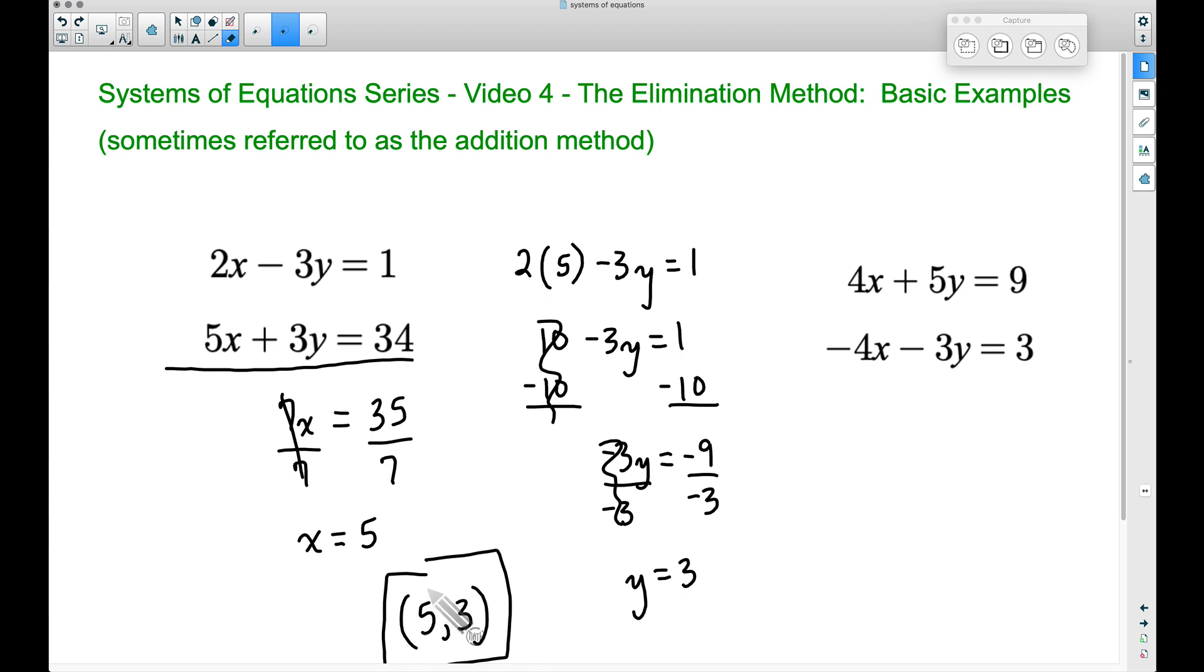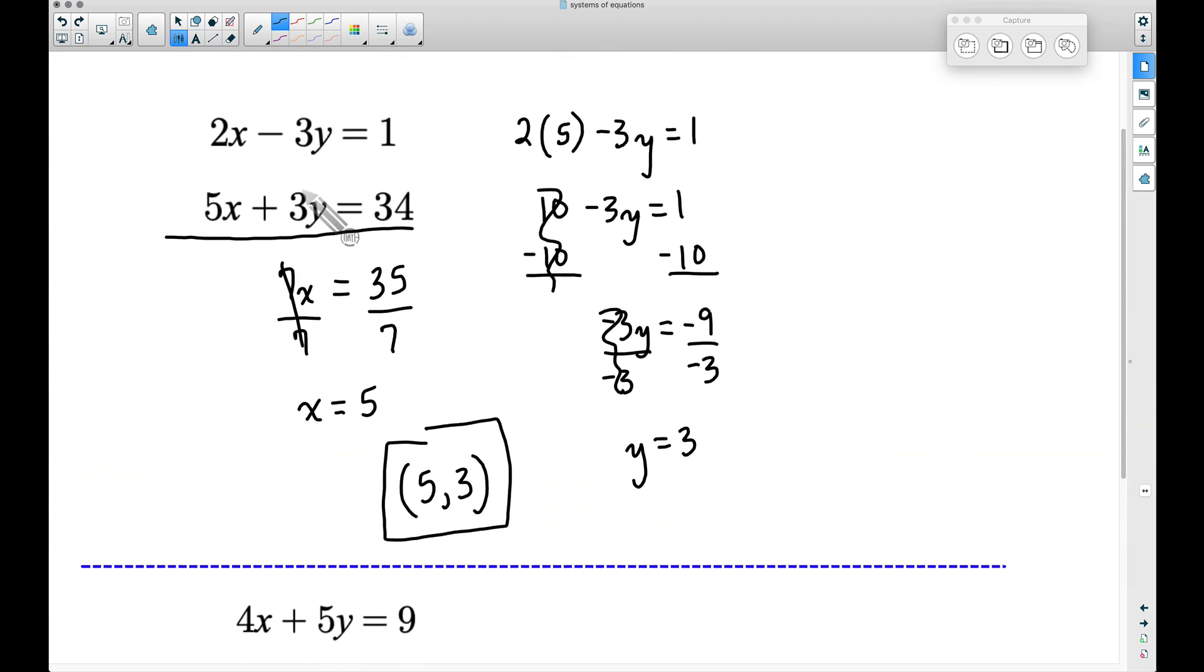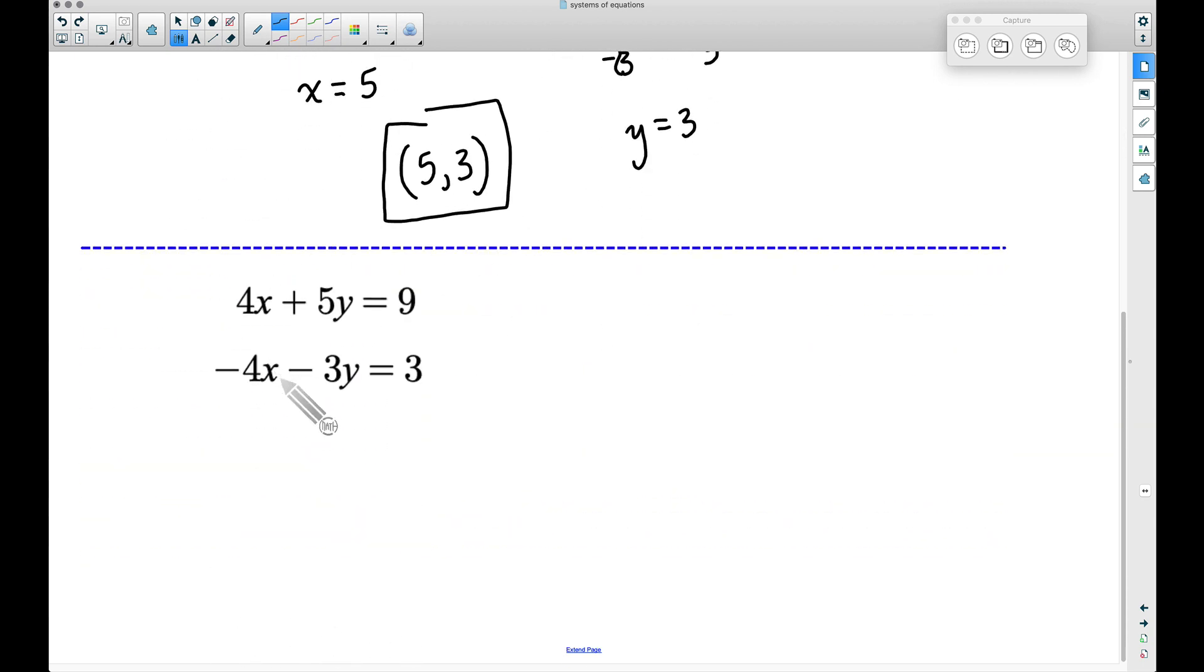Now let's work on this example here. What I want you to notice is that in the first example, the y's got eliminated. In this example, we can actually eliminate the x's. We have 4x minus 4x—they cancel out. 5y minus 3y is 2y. You have to be careful with your signs here. 5 minus 3 gives us 2, and this equals a positive 9 and a positive 3, which gives us 12.